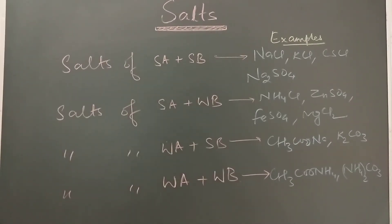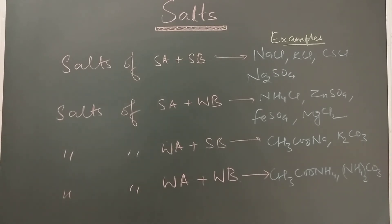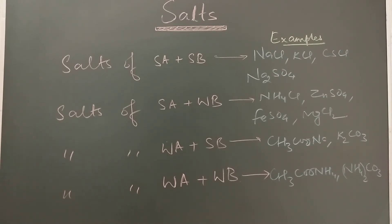Now let's see different salt categories. Salts of strong acid and strong base — examples are sodium chloride, potassium chloride, caesium chloride, and sodium sulfate. Sodium comes from sodium hydroxide which is a strong base, and chlorine comes from hydrochloric acid which is a strong acid. Salts of strong acid and strong base do not undergo any hydrolysis, so their pH remains neutral.